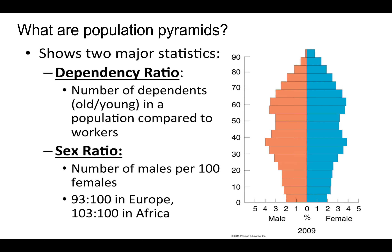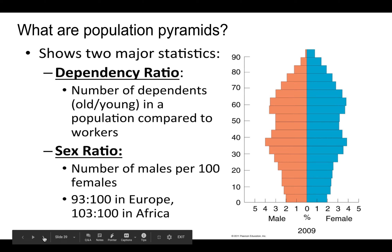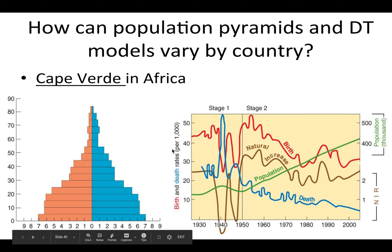The sex ratio shows both sides of the population pyramid, with men represented in blue and women in light red. In Europe we see fewer men relative to women, while in Africa we see more men relative to women. This is because life expectancy in Europe is much higher than in Africa for both genders.